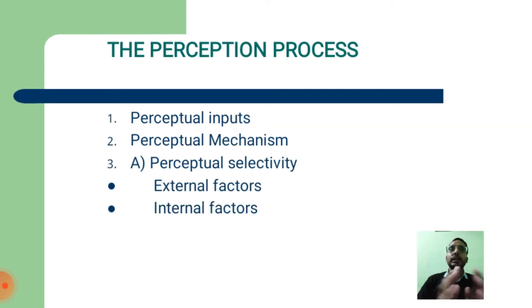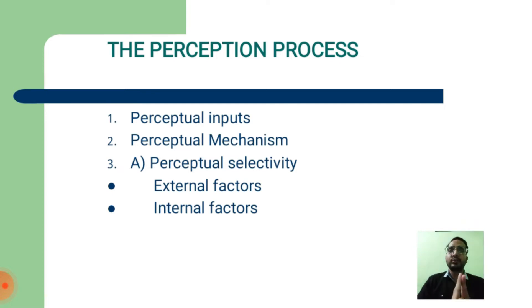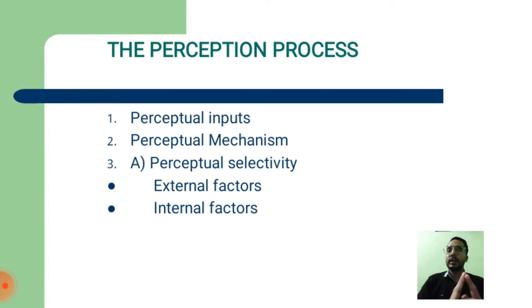The perception process has three steps. First, perceptual input. Second, perceptual mechanism. Third, perceptual selectivity. There are two types of factors: external factors and internal factors.